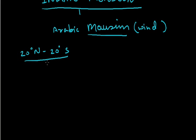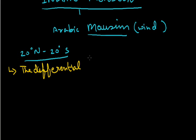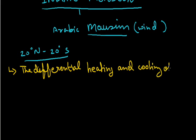To understand the mechanism of the monsoon, the following facts are important. The first fact is the differential heating and cooling of land and water.